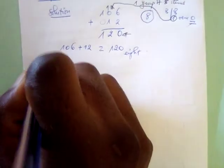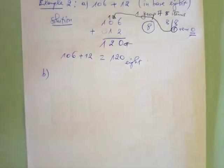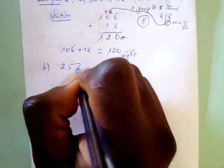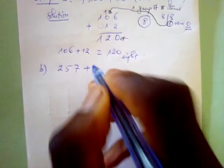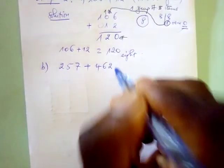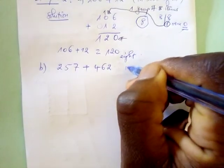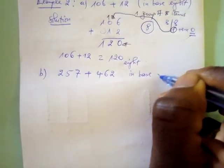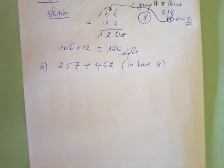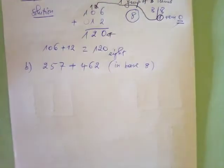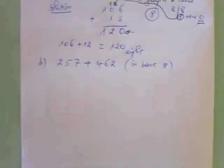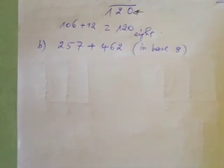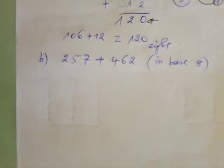Now let's have example B: we have 257 plus 462, also in base eight. We will do it the same way as the last example.